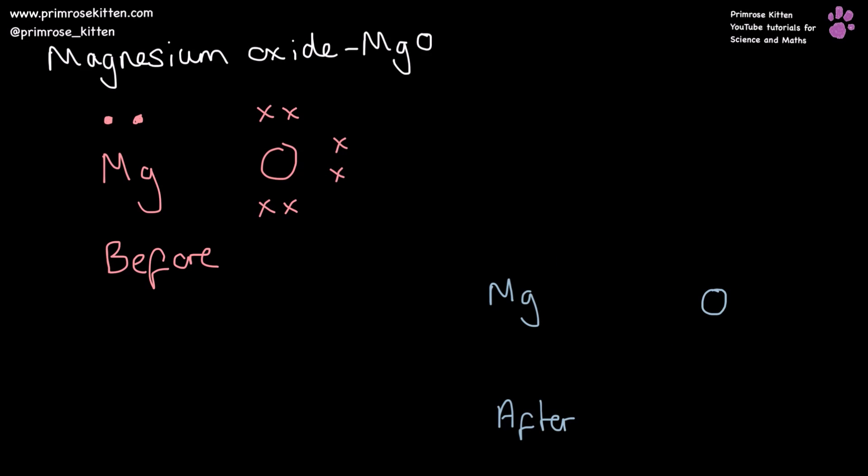Magnesium oxide: magnesium has two electrons on its outer shell and oxygen has six electrons on its outer shell. Magnesium wants to lose these two electrons, and oxygen has space for two electrons, so these two are just going to go over here.